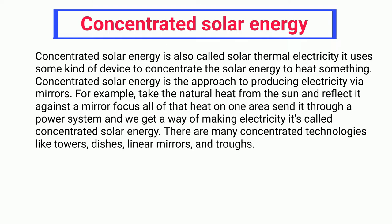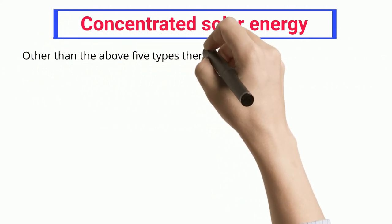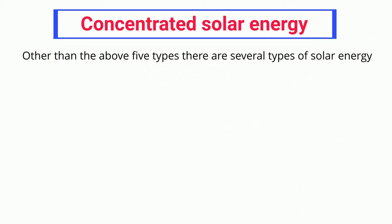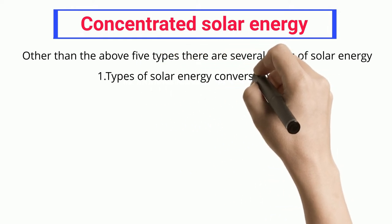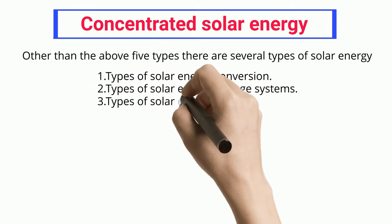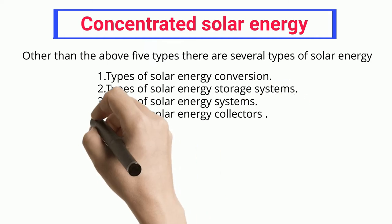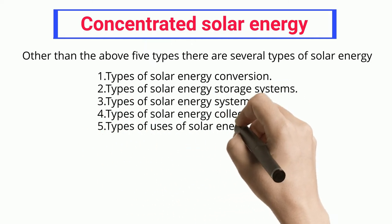There are many concentrated solar technologies like towers, dishes, linear mirrors, and troughs. Other than the above five types, there are several more types of solar energy: types of solar energy conversion, types of solar energy storage systems, types of solar energy systems, types of solar energy collectors, and types of uses of solar energy.